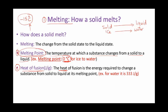The heat of fusion is an amount of thermal energy required to change a substance from a solid state to a liquid state, but the condition is it must be at the melting point. For example, ice needs 333 joules per gram. For each gram of ice, you need 333 joules of heat. If the ice is at zero degrees Celsius and you give it this amount of heat, it will change into water. If you have two grams, you need 666 joules, and so on.